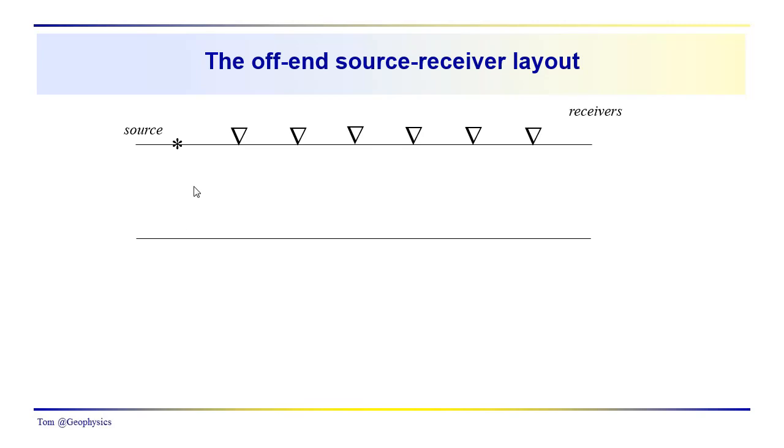In this video we're going to discuss a couple source receiver layouts. This is referred to as an off-end source receiver layout. We have the source on one end. We have a series of geophones and in this case just six are shown.